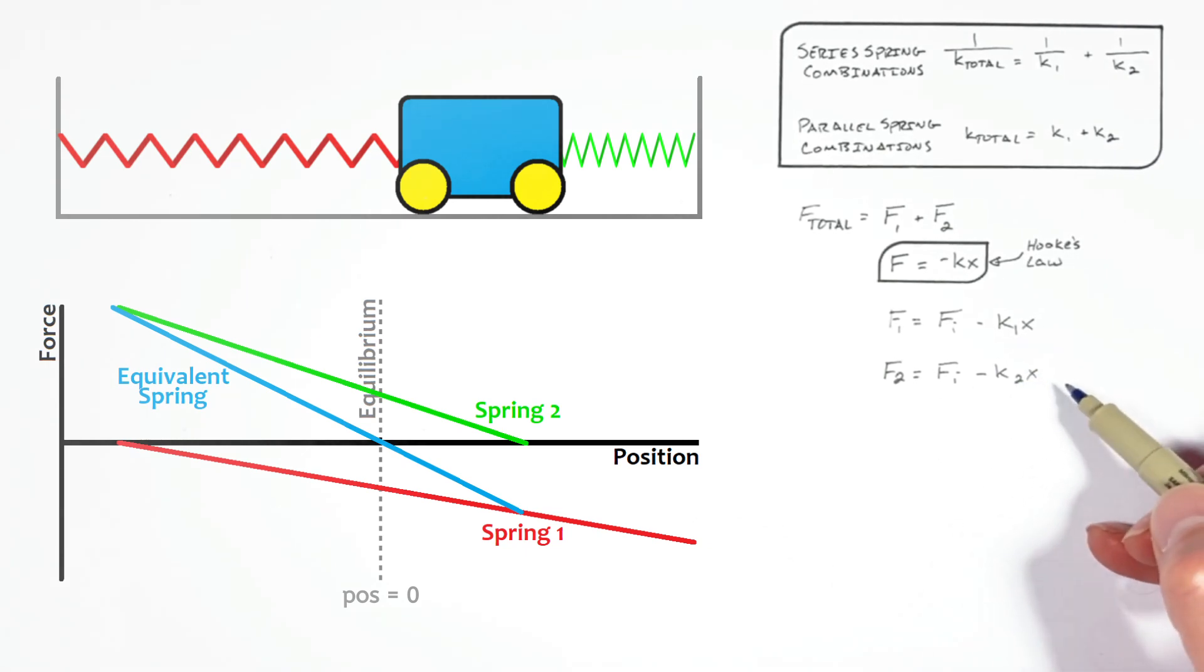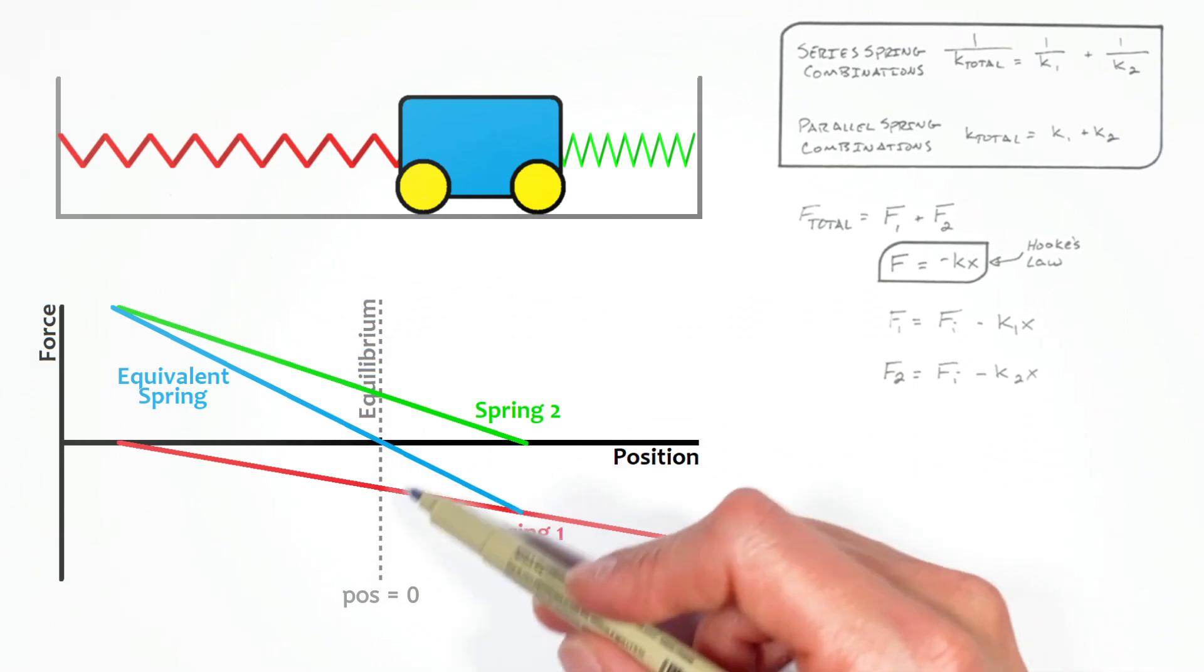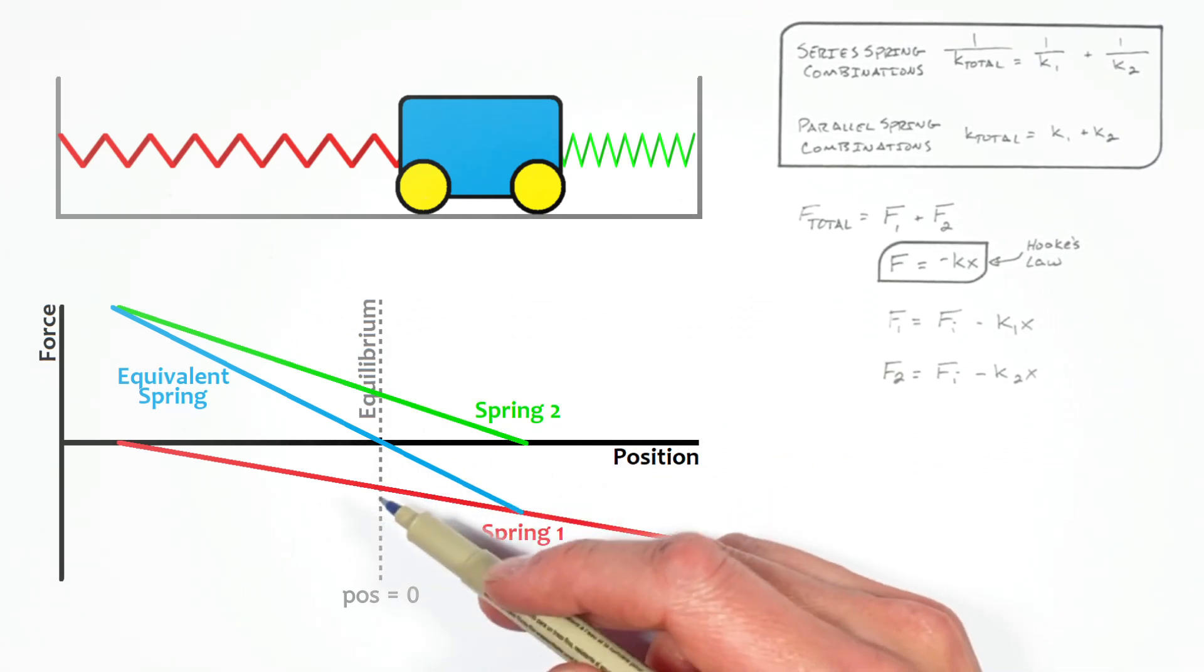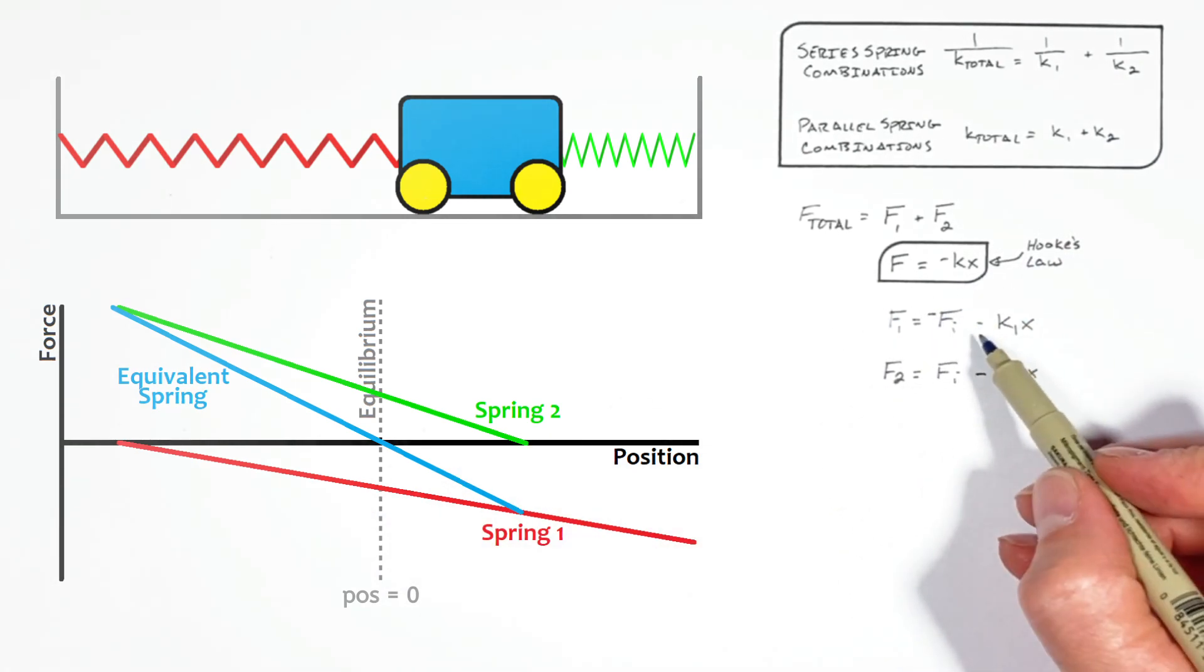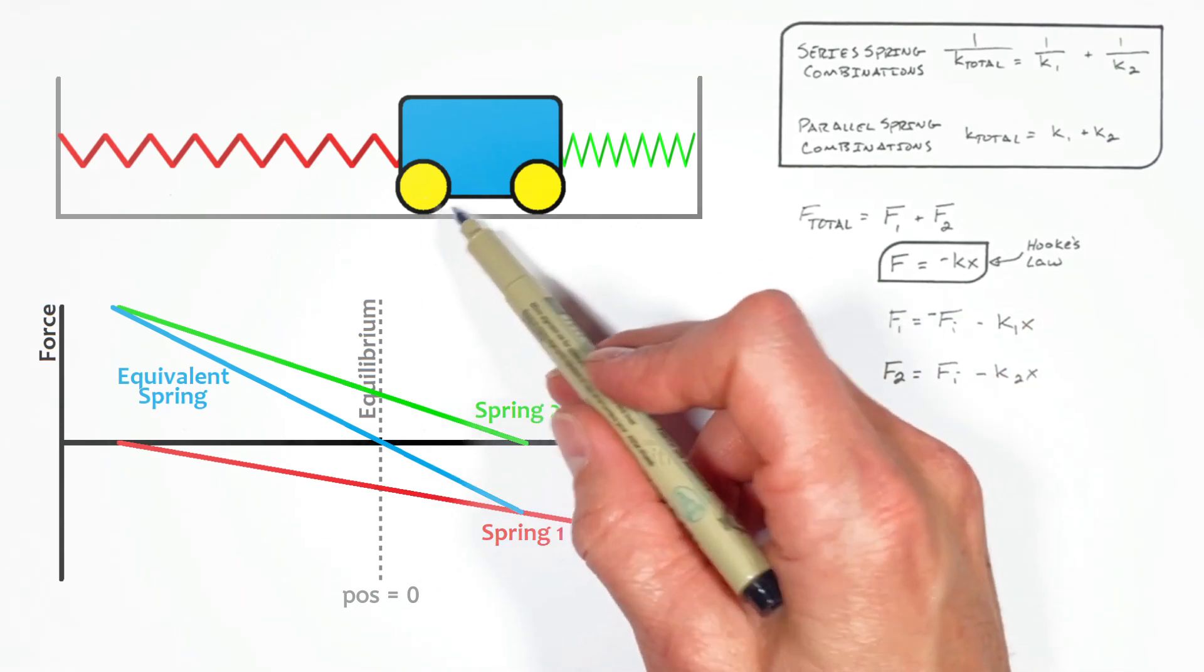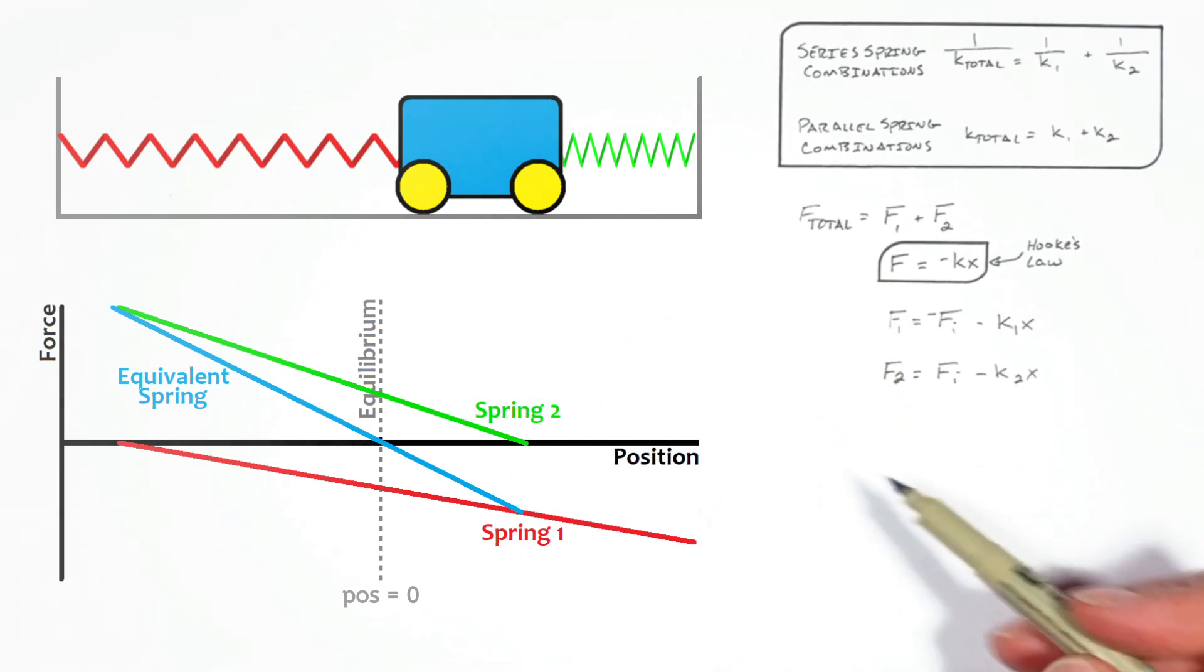But we have to be a little bit careful here. You see, spring one was initially pulling to the left, or really we could say it had some initial force, whatever that force may be, that was negative, making this term right here a negative value. F2, on the other hand, was pulling to the right, making its initial force positive, just as we saw right here.